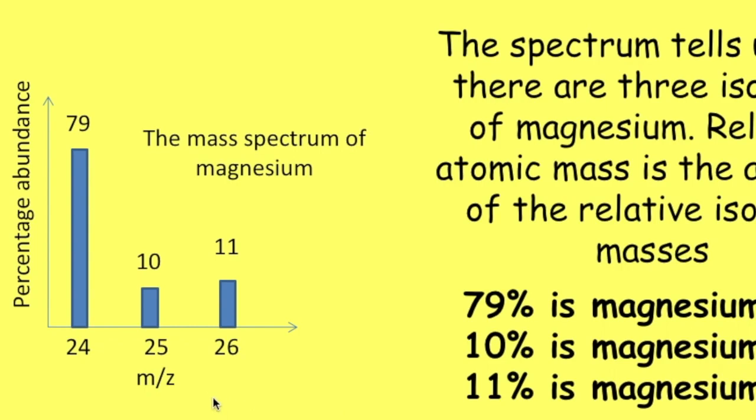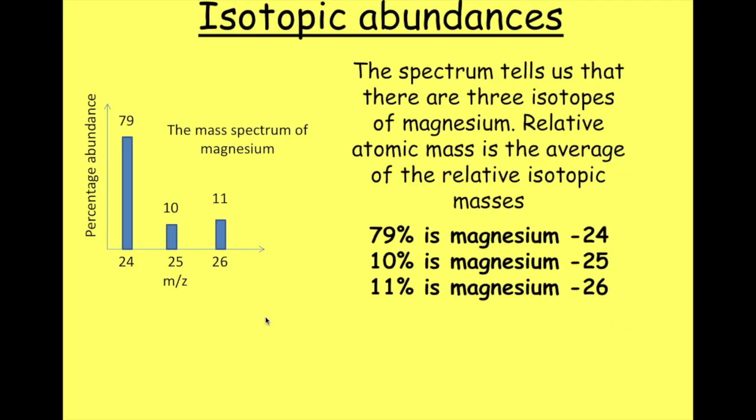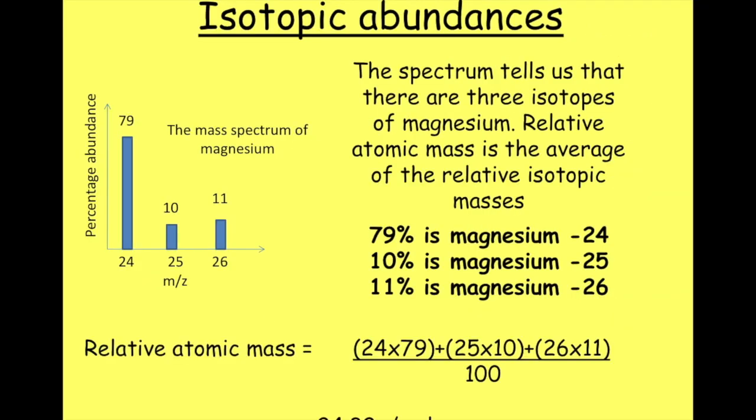So how do we work out the relative atomic mass from that, the one displayed in the periodic table? Well, it's a fairly straightforward calculation. We're just going to do 24 times 79, plus 25 times 10, plus 26 times 11, and divide it by 100 as they all add up to 100 in this case.